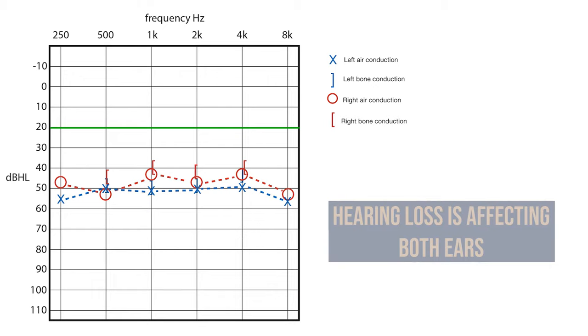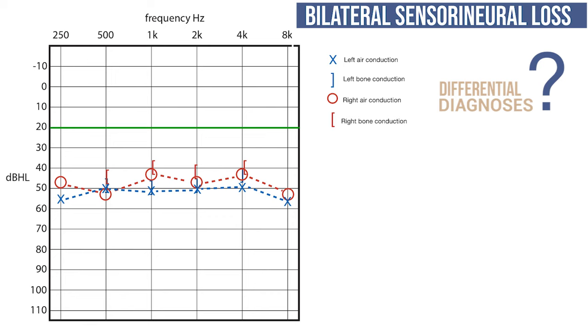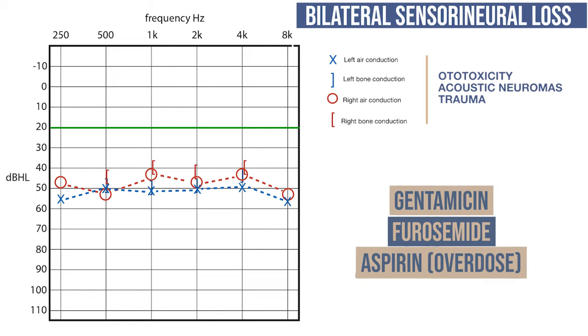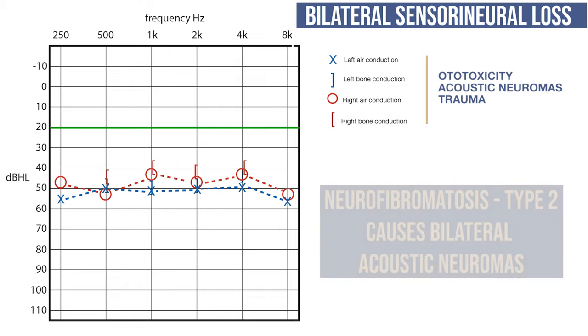In this audiogram, both ears are affected and both show bone and air conduction deficits. Therefore, this is bilateral sensorineural hearing loss. Although rare in the UK, a possible differential for bilateral sensorineural hearing loss is ototoxicity. It can be caused by a number of drugs such as aminoglycosides such as gentamicin, loop diuretics or aspirin if taken in high enough quantities. Other differential diagnoses could be trauma or bilateral acoustic neuromas if the patient suffers from neurofibromatosis 2 for example.